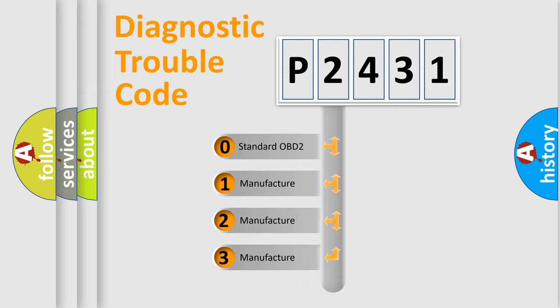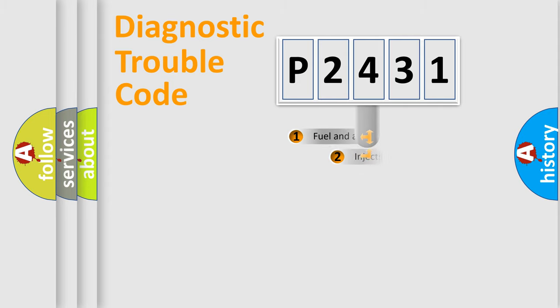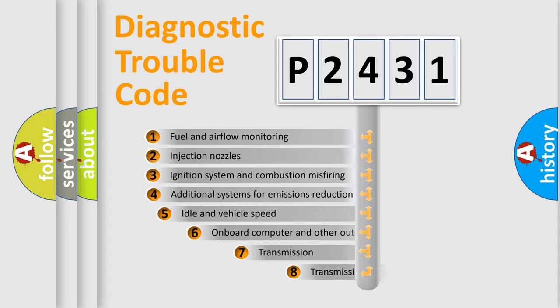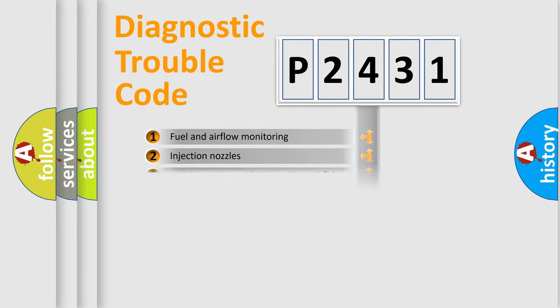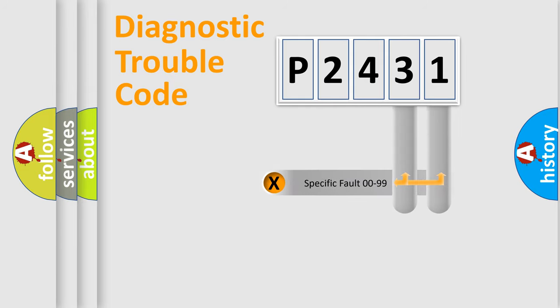If the second character is expressed as zero, it is a standardized error. In the case of numbers 1, 2, or 3, it is a more specific expression of the car-specific error. The third character specifies a subset of errors. The distribution shown is valid only for the standardized DTC code.